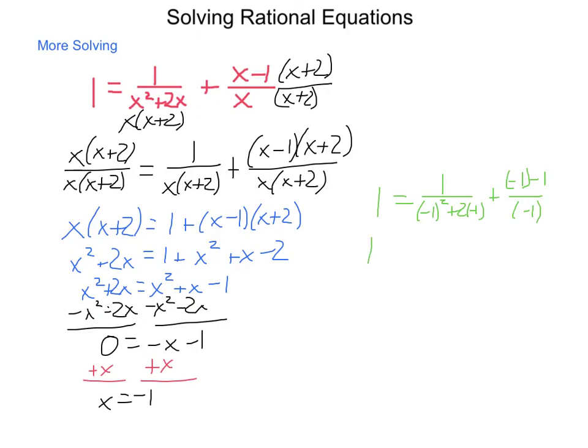Simplifying, I have 1 = 1/((-1)² is 1, 2(-1) is -2) plus we get -2/(-1). So I have 1 = 1/(-1) + 2/1, 1 = -1+2 and I get 1 = 1. So, this checks out, my answer here is x = -1.